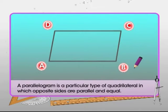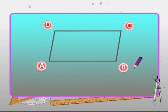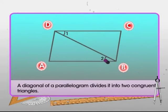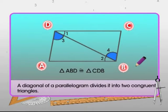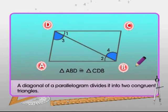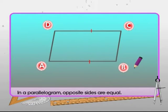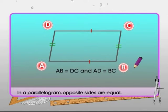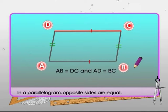A parallelogram is a particular type of quadrilateral in which opposite sides are parallel and equal. The diagonal of a parallelogram divides it into two congruent triangles — in the given figure, triangle ABD is congruent to triangle CDB. In a parallelogram, opposite sides are equal: AB is equal to DC, and AD is equal to BC.